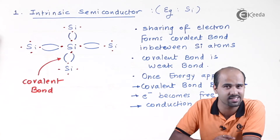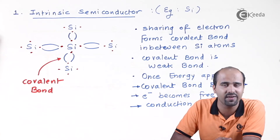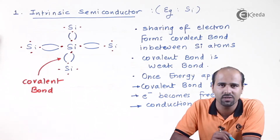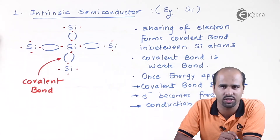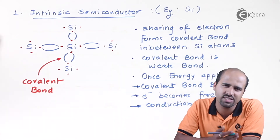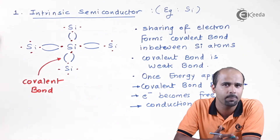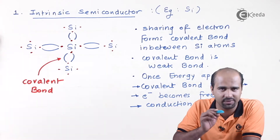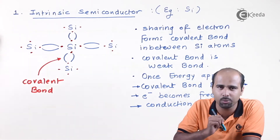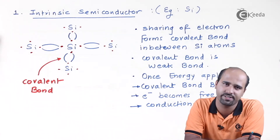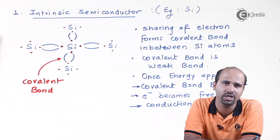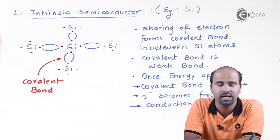How does conduction get started? If I provide enough energy to break the covalent bond — and since covalent bonds are weak, less energy is required — I will break that bond and get free electrons. These electrons will be responsible for the conduction process.